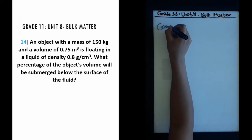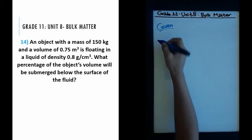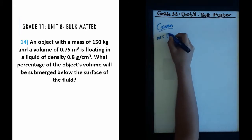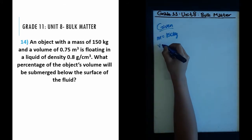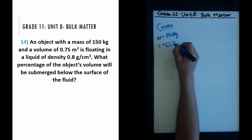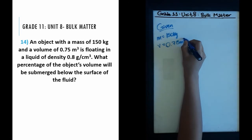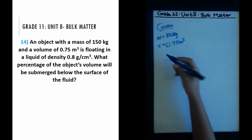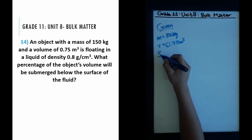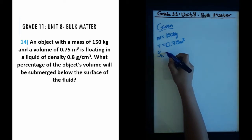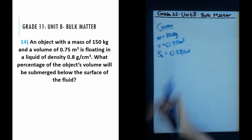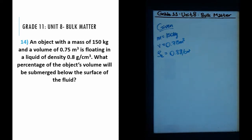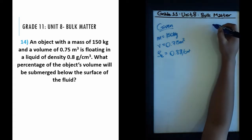Whenever you see a whole bunch of quantities like this, write down what you are given. We are given the mass of the object, which is 150 kg; the volume of the object, which is 0.75 meters cubed; and the density of the liquid the body is floating in, which is 0.8 grams per centimeter cubed. We can already see we'll need to change some units.